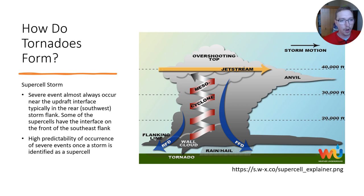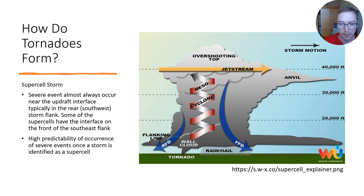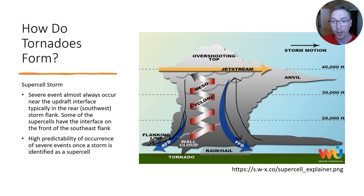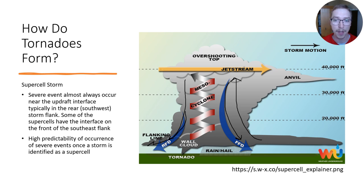Supercell tornado events almost always occur near the updraft interface, typically in the rear or southwest side of the storm flank. We have our rear flank downdraft — RFD — and a front flank downdraft. That rear flank downdraft is what a lot of storm chasers will look for when they're looking for something that could spawn tornadoes. There is high predictability of severe events once a storm is identified as a supercell, whether it's wind, lightning, or hail — these are the types of cells that do a lot of damage.